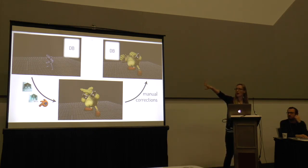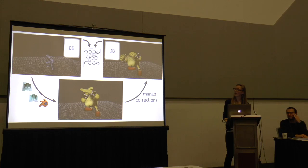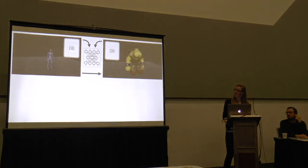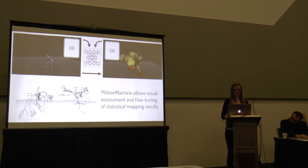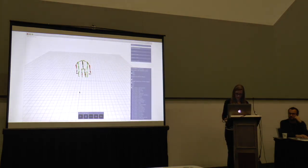We have a database of actor motion capture data, and then a database of corresponding motions that have been modified by the professional animator. Then you try to train a model that will do that transformation directly — so once you have trained your model, you hope that you can input new actor data and directly have the proper style for your virtual character. There is a need to present the output results to the user in a way that makes it easy to evaluate the quality of the results and see how different model parameters influence them.